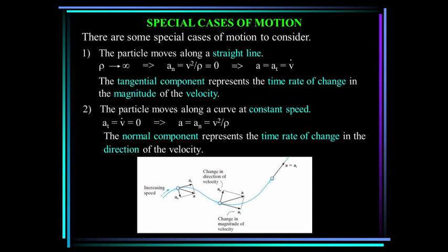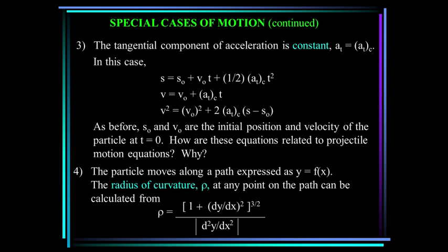Here are some special cases. If the particle is moving along a straight line, rho is infinity, so the normal component v-squared over rho equals zero, and the tangential acceleration is still the rate of change of the velocity. If the particle moves along a curve at constant speed, the tangential component of acceleration is zero, but the normal component is still v-squared over rho. If the tangential component of acceleration is constant, we can write kinematic equations related to the projectile equations because the acceleration is constant.